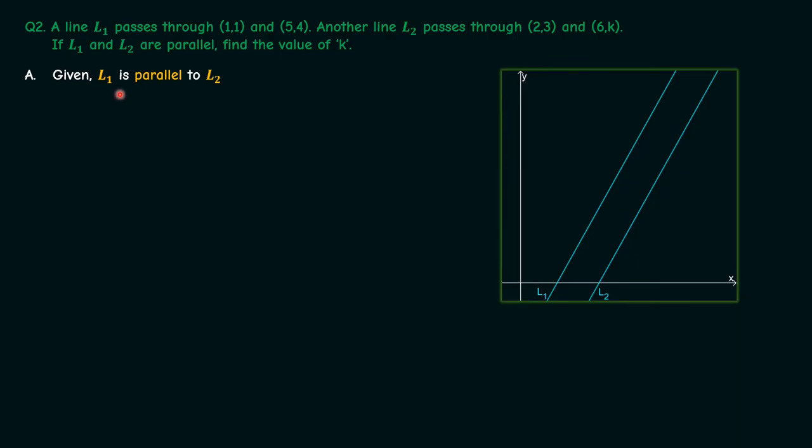Given the lines L1 and L2 are parallel to each other, we know that the slope of L1 should be equal to slope of L2. Slope of L1 is (4-1)/(5-1). This will be equal to slope of L2 which is (k-3)/(6-2).